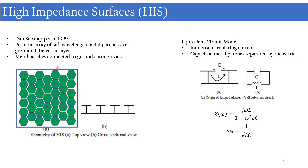High impedance surfaces was introduced in 1999 by Dan Sievenpiper. It consisted of a periodic array of sub-wavelength patches over a grounded dielectric. The patches are of hexagonal shape and these are connected to the ground through vias or wires. This is the top view and the cross-sectional view of the high impedance surfaces.